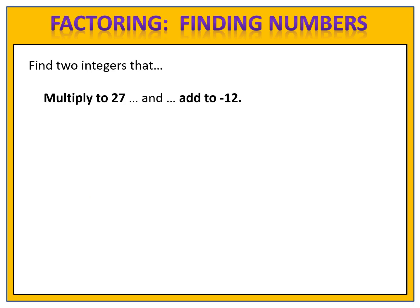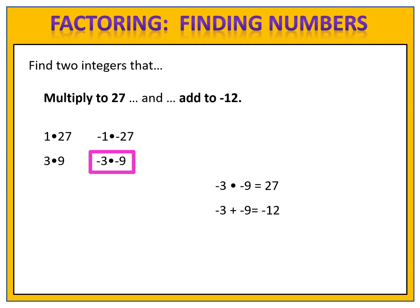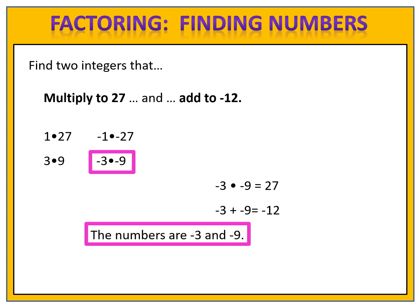Can you find two integers that multiply to 27 and add to negative 12? Please pause the video. Possible candidates include 1 times 27, 3 times 9, negative 1 times negative 27, and negative 3 times negative 9. You could find those from your head or use the graphing calculator — enter 27 divided by x and look in the table. We need the pair that adds to negative 12: negative 3 plus negative 9 is negative 12. Verify: negative 3 times negative 9 is 27, and negative 3 plus negative 9 is negative 12. The numbers are negative 3 and negative 9.